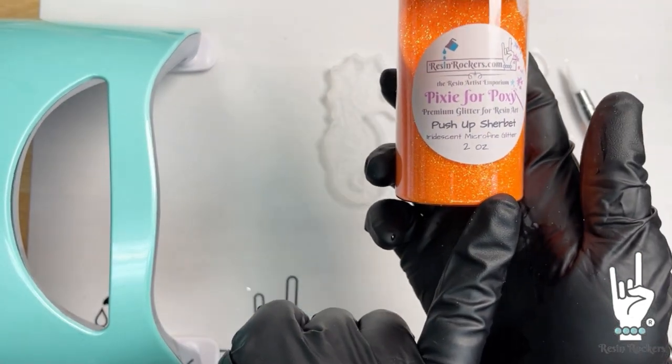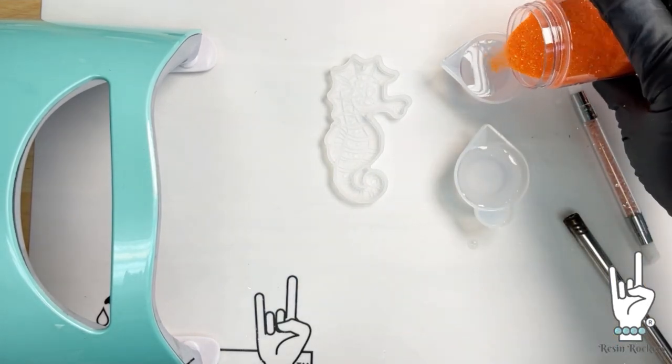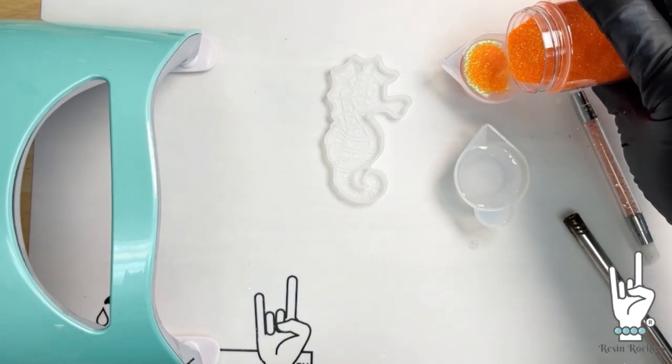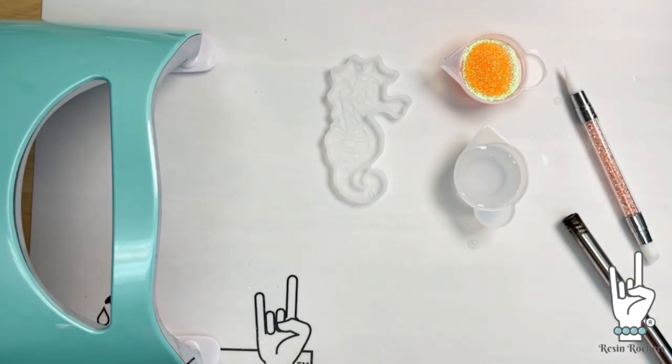The first glitter we're going to use is Pushup Sherbet. This is a great iridescent. It has tons of sparkle and it's very fluorescent. So it is nice and vibrant, perfect for a tropical fish.